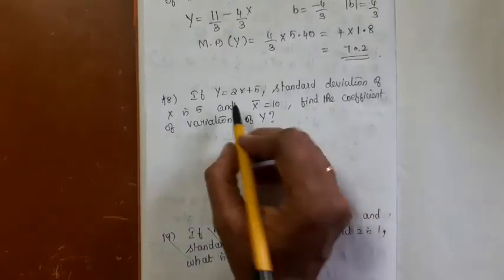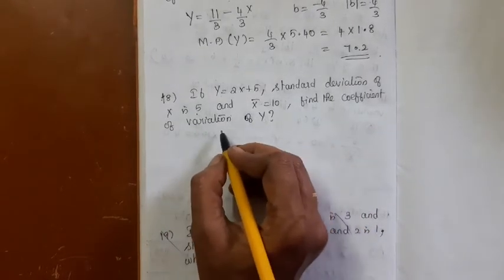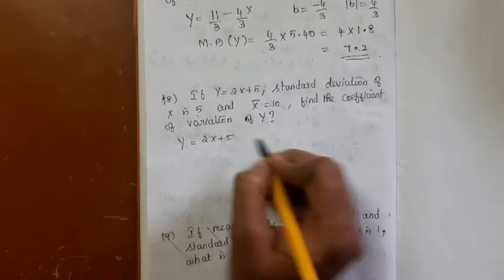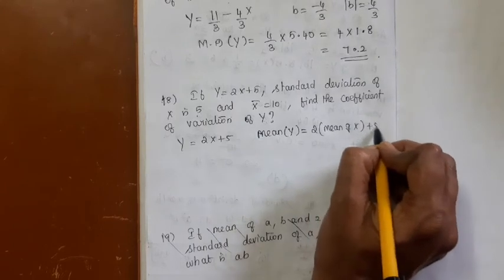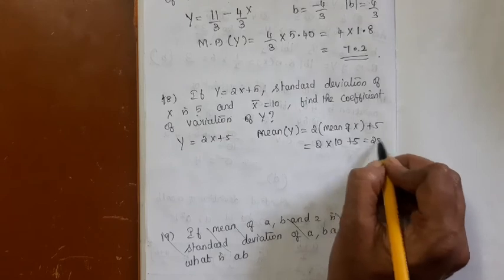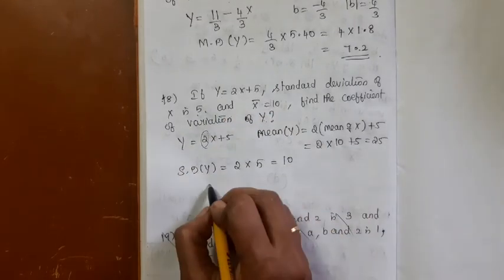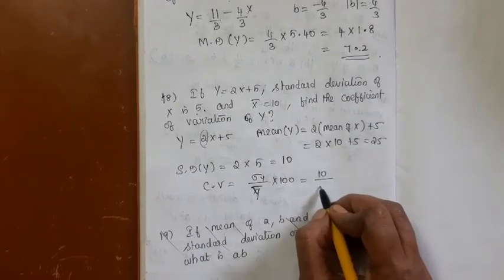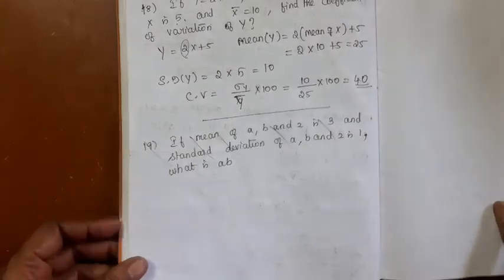If y = 2x + 5, SD(x) = 5, and x̄ = 10, find the coefficient of variation of y. Mean of y = 2 × mean of x + 5 = 2 × 10 + 5 = 25. SD(y) = 2 × SD(x) = 2 × 5 = 10. Coefficient of variation = (SD(y) / ȳ) × 100 = (10/25) × 100 = 40. The answer is 40.